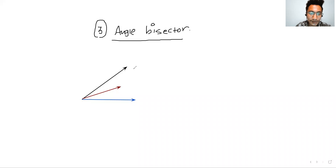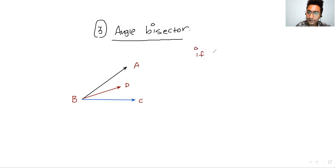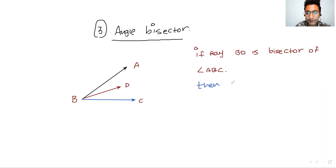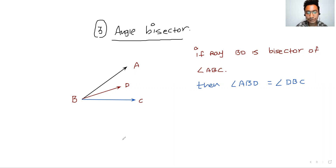Now, if you look at this figure, we give the name A, vertex B, C, and D. When it is said that ray BD is the bisector of angle ABC, the answer will be that angle ABD equals angle DBC — both these angles become equal. If someone did not understand: if ray BD bisects angle ABC, then both the sub-angles created are equal.